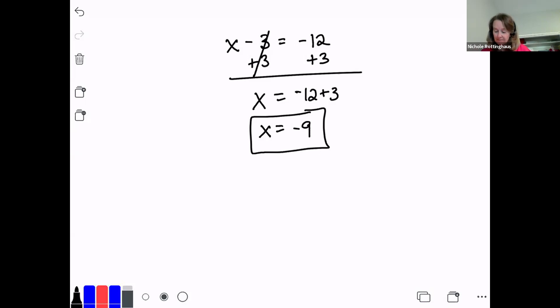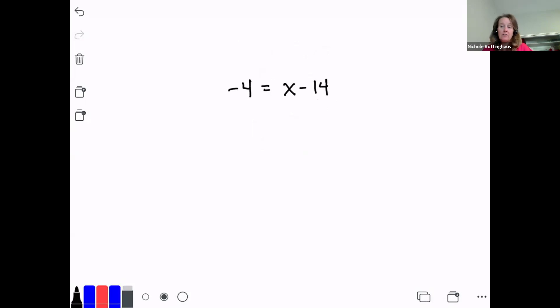Let's do negative four equals x minus 14. I just reversed it. I put the x on the other side. It's no big deal. It's a subtraction equation. I'm taking away 14 from x. So to solve it, I need to add 14 to both sides. x equals negative four plus 14. They're unlike signs. So I subtract them. 14 minus four is 10. 14 is bigger, so it's going to stay positive. x equals 10.